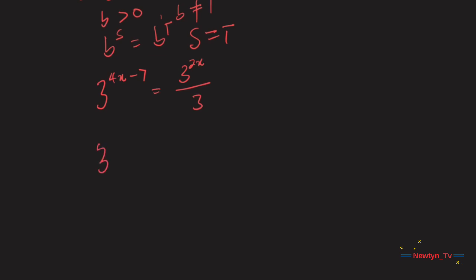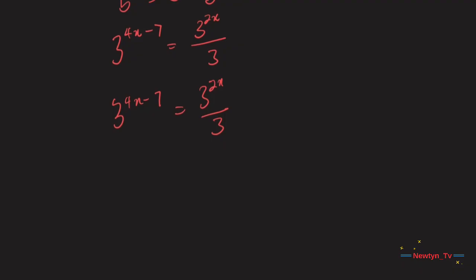So, 3 exponent (4x minus 7) is equal to 3 exponent 2x divided by 3. Let's rewrite 3 as 3 exponent 1. When we do that, we get 3 exponent (4x minus 7) should be equal to 3 exponent 2x divided by 3 exponent 1.